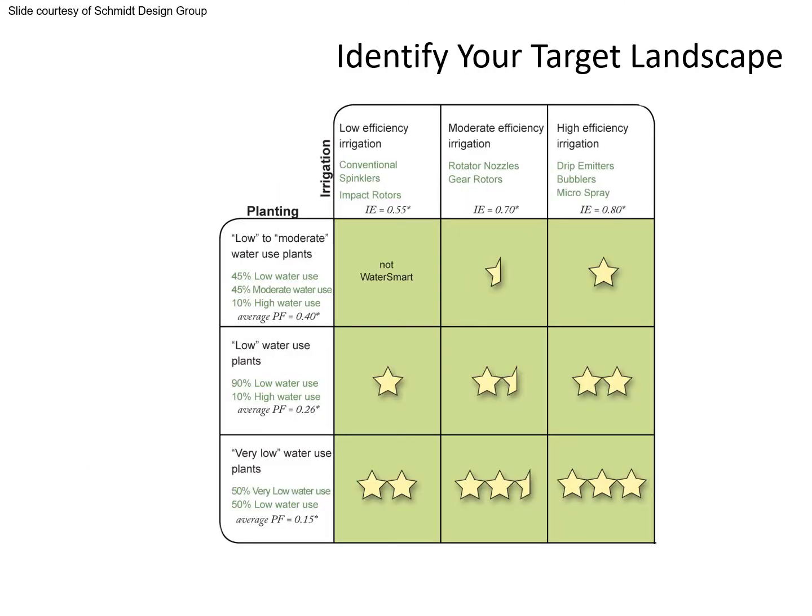We want to look at water conservation related to how much water the plants we've selected use and how efficient our irrigation system is. When we have a high efficiency irrigation system and very low water use plants, we end up with a multiple-star water use rating.